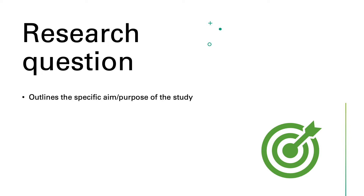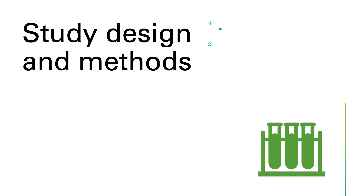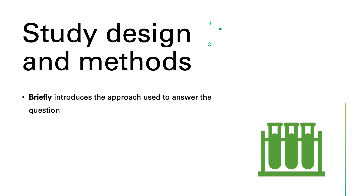The last essential component of the introduction section is the research question. Following the identification of the gap in current knowledge, this part outlines the specific aim or purpose of the study, and should include the study objective or hypothesis that will address the identified gap. Though not essential, you can also briefly introduce the approach used to answer the research question, keeping it very brief since the methodological approach will be described in depth in the methods section.